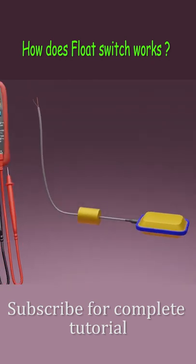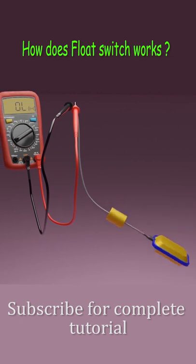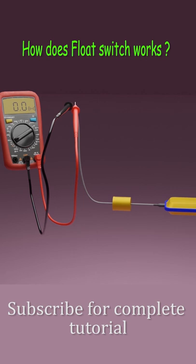If we check the continuity of the wires of the float switch with a multimeter, as the switch goes down, the multimeter shows an open circuit between these two wires. As the water level goes up, the float switch floats on the water surface and takes a horizontal position, and its wires become shorted to each other and the multimeter shows a continuity between these two wires.